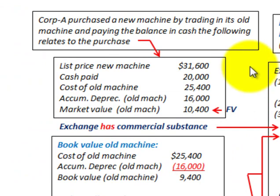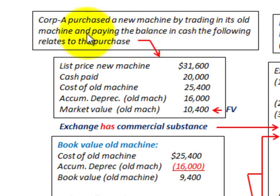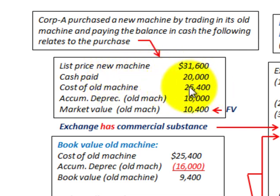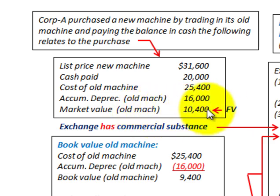So let's look at the problem itself. Corporation A purchases a new machine by trading in its old machine and paying the balance in cash. We're given the list price of the new machine, the cash paid, the cost of the old machine on the books, the accumulated depreciation of the old machine, and — key here — the market value of the old machine, which is its fair value.